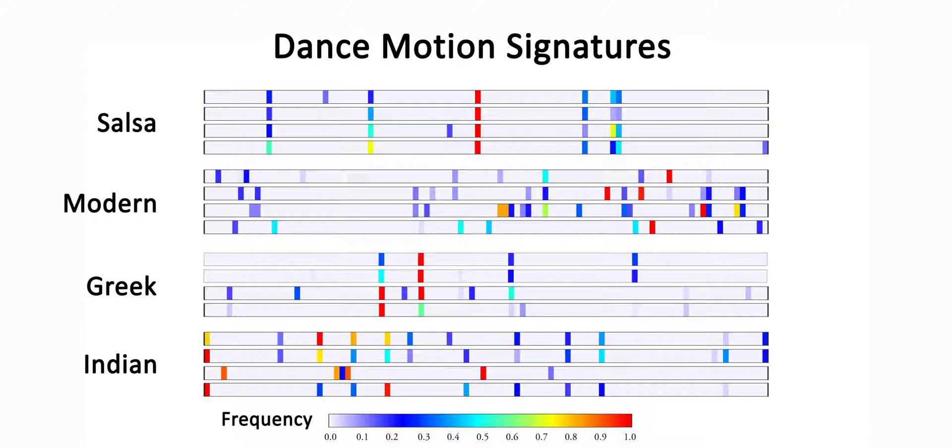Note how highly diverse dances such as modern dancing have larger distribution of motion words along the signatures compared to other types of dances such as the Greek folk dancing which is more structured.